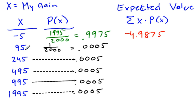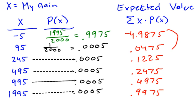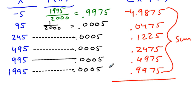And 95 times 0.0005 is equal to 0.0475. And then 245 times 0.0005 is equal to 0.1225. And then the product here is 0.2475. The next product is 0.4975. And the last one is 0.9975. So when I find the sum of all of this, I add all of those together, I end up getting negative 3.075.